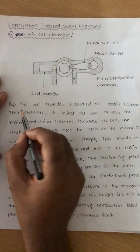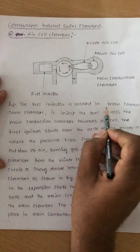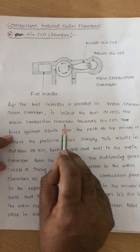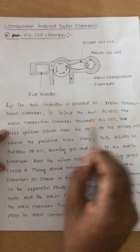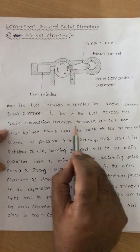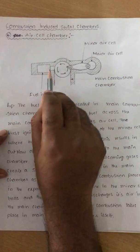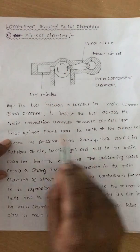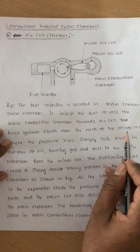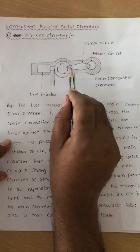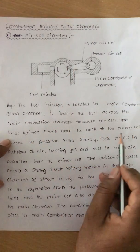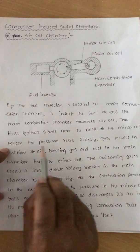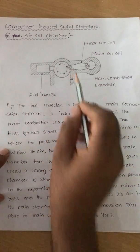The key information here is that the fuel injector is located in the main combustion chamber. It injects the fuel across the main combustion chamber towards the air cell. The first ignition starts near the neck of the minor cell, where the pressure rises sharply.